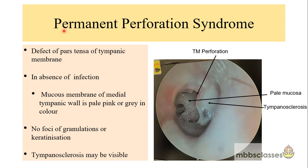In cases of permanent perforation syndrome, the defect will be seen in the pars tensa of the tympanic membrane. This defect is common to both variants. But the difference is that when the ear is dry with no infection, the mucous membrane of the medial tympanic wall — that is the promontory — appears pale pink or gray in color.